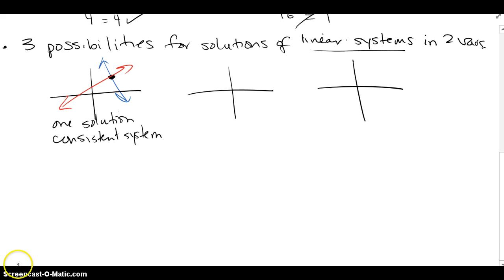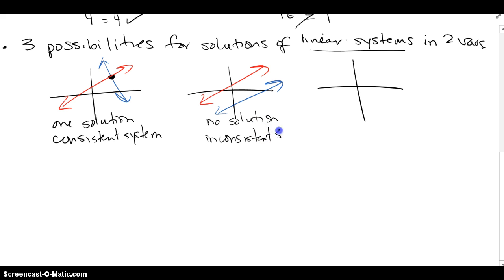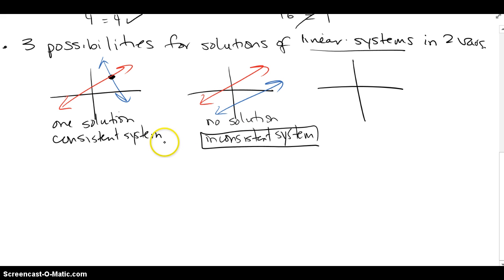Another thing that could happen is you look at your first line and then your second line, and they happen to be parallel lines. If they're parallel, they're never going to intersect — they're never going to meet. So that's the case when there is no solution, and it's called an inconsistent system. No solution means the lines are parallel; they never meet and have nothing in common.